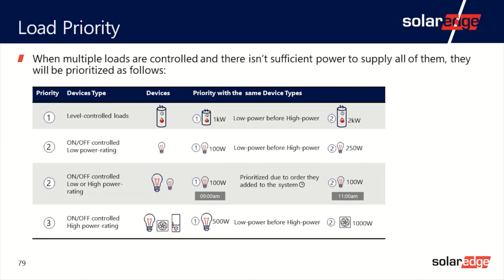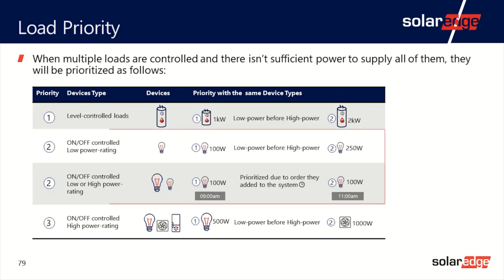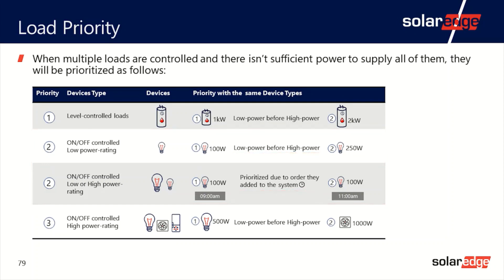When multiple loads are controlled and there isn't sufficient power to supply all of them, they will be prioritized as follows: Priority one for level-controlled loads. Priority two for on/off controlled low power rating — within this section, for the same device types, lowest power comes first and devices added first to the system come first. Priority three for on/off controlled high power rating.